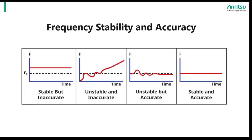This is problematic for users and can result in many issues, from bad data to loss of time troubleshooting why a measurement is not working correctly. The second example shows a signal that is neither stable nor accurate. This is the worst case scenario for any signal generator user.